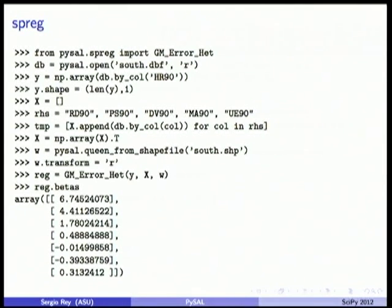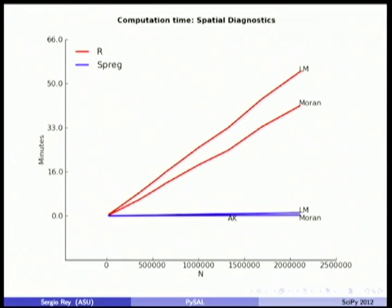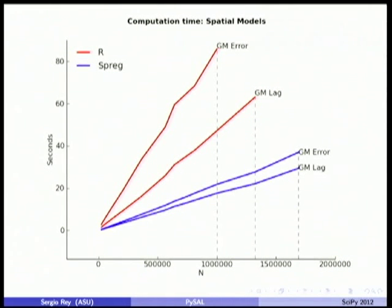We've done performance experiments comparing SPREG with R's SPDEP. For diagnostic tests for spatial dependence on artificial lattices, we're up to 2.2 million observations and our scaling is very good time-wise — the R project, not so much. For estimation, it's more challenging, but we're able to handle much larger sample sizes than R, because of how we exploit SciPy sparse and memory management.